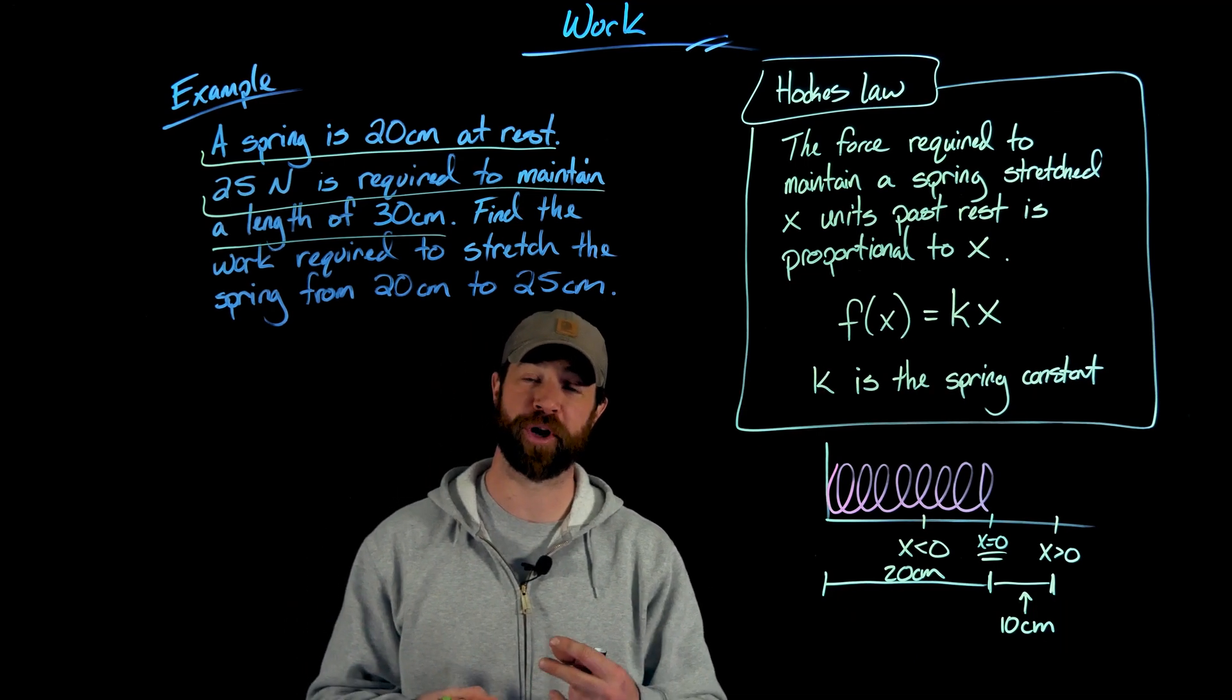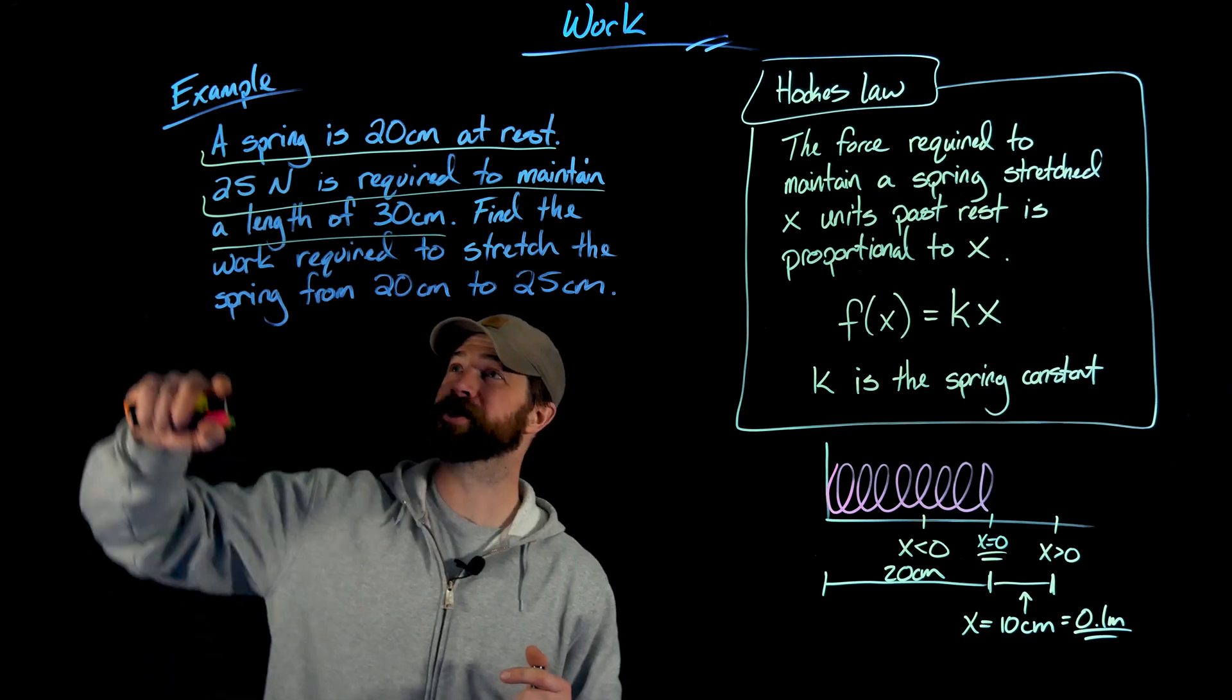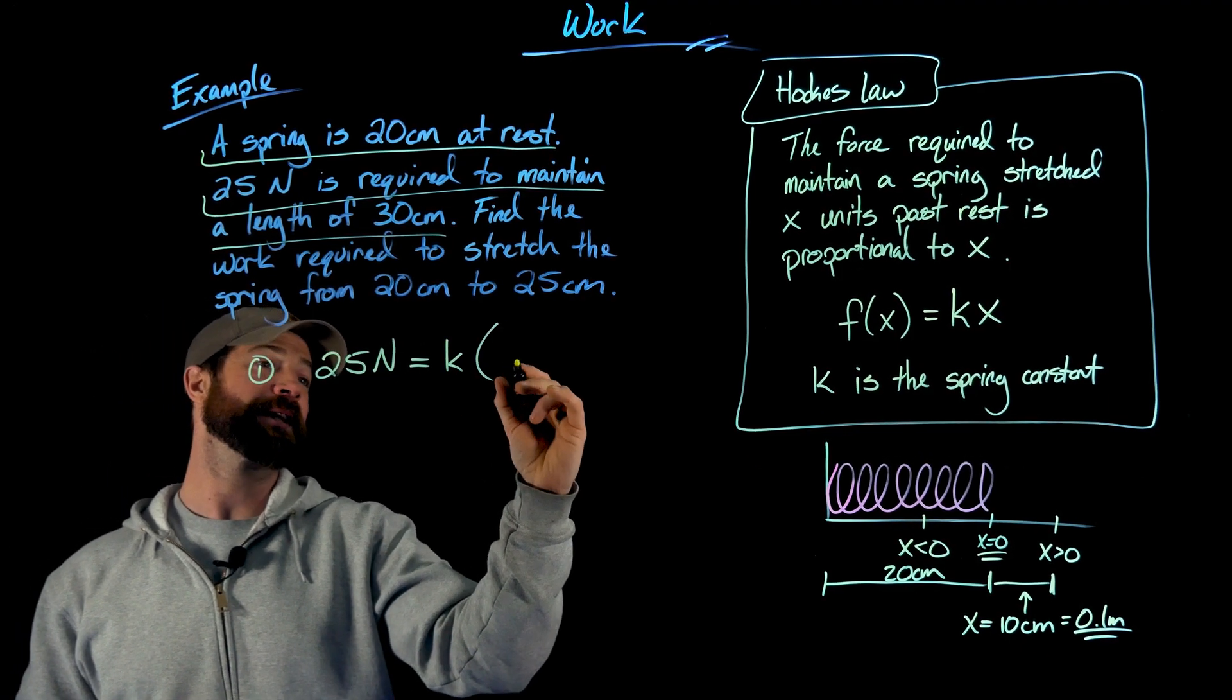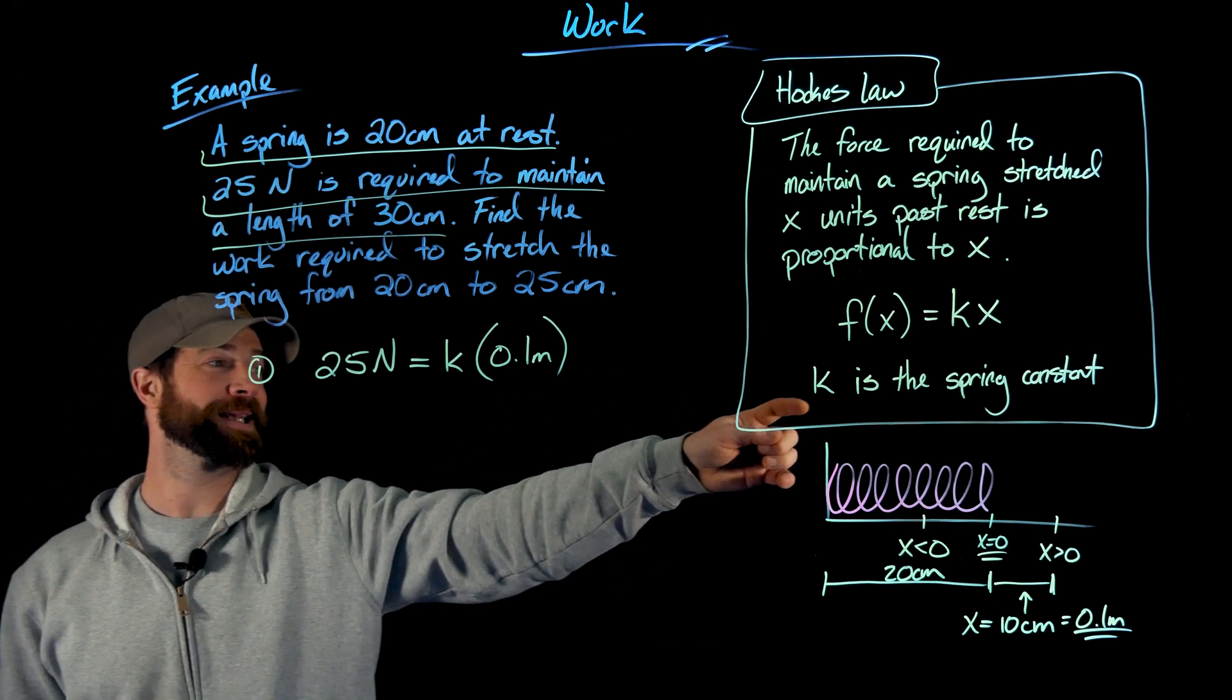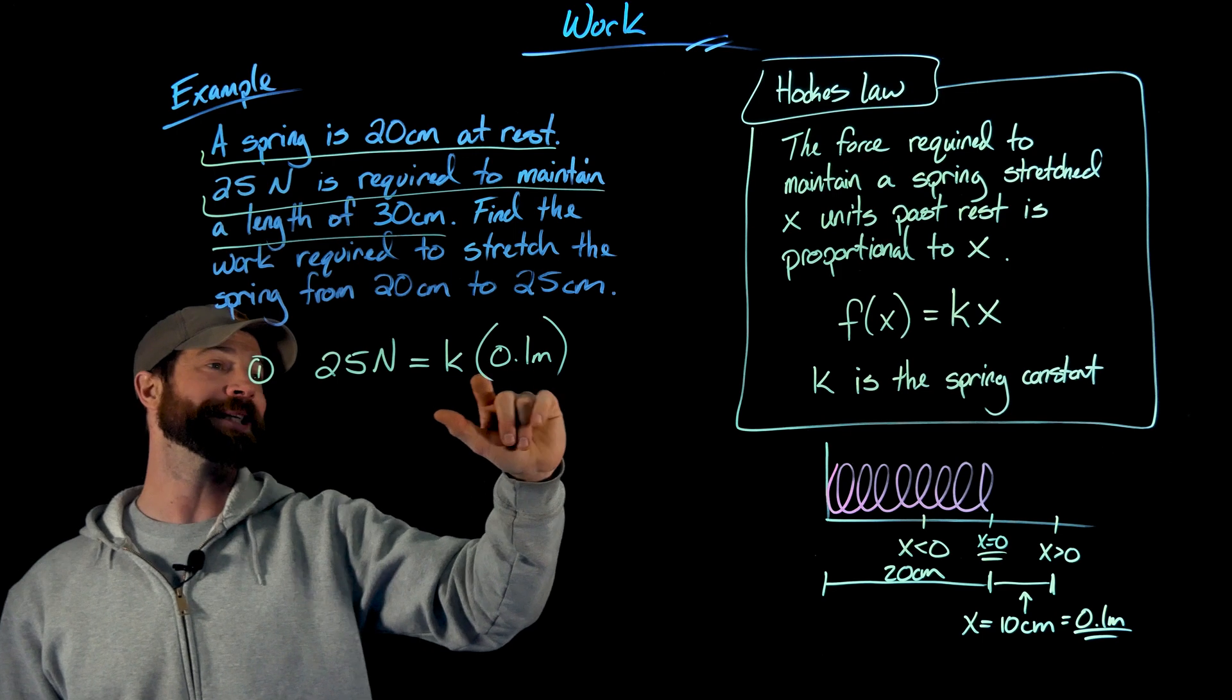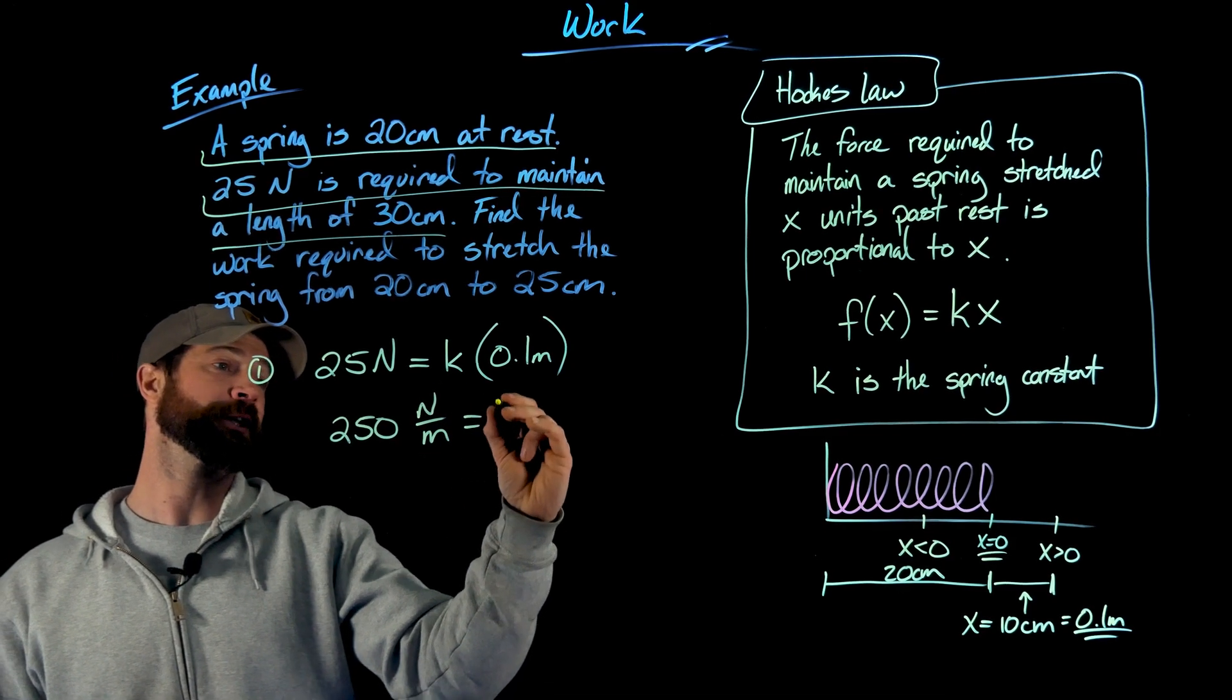As I said previously, for these work problems and force problems, when we're dealing with the metric system, we're going to use meters. So I'm going to translate 10 centimeters into 0.1 meters. So then we know the force is 25 newtons when x equals 0.1 meters. So we're working with this force function. We have 25 newtons equals k times the number of meters, which is 0.1 meters. And importantly here, what we're doing is trying to find the spring constant. These first sentences are helping us figure out the spring constant. And then once we have our force function, when we have k, we will be able to apply integration to this. But in this case, what I'm going to do is divide by one-tenth of a meter. When I divide by one-tenth, it's the same as multiplying by 10. So what I'll end up getting is 250 newtons per meter, which is our spring constant.